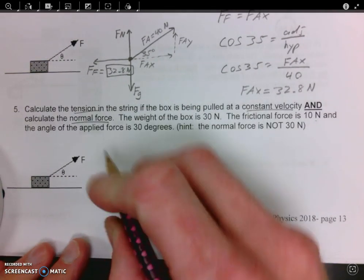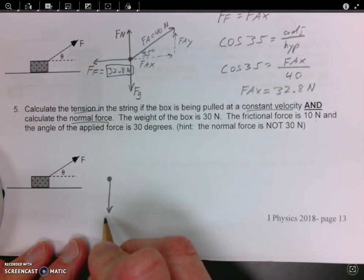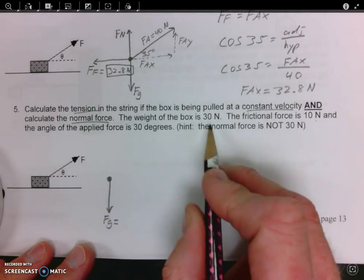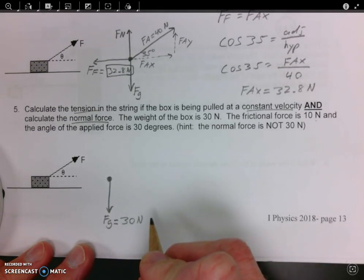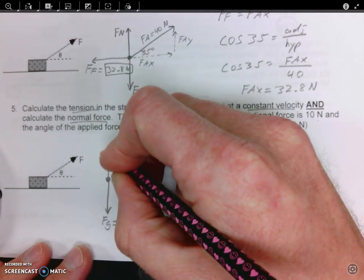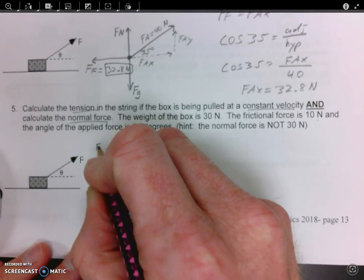So let's first make a force diagram. The force of gravity is another name for weight that was given to us—it's 30 newtons. We know the box is sitting on a surface, so there will be a normal force that acts perpendicular to the surface.